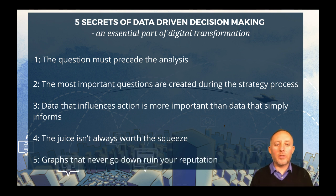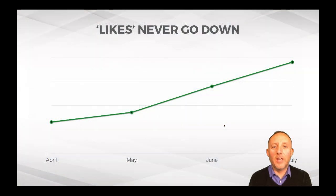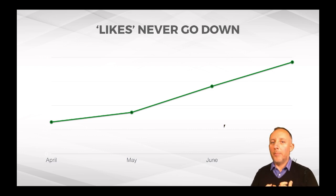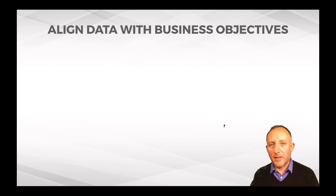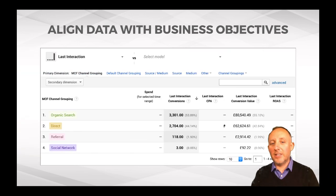Here is number five, the last one. Graphs that never go down ruin your reputation. I have never seen a graph for social media likes or following go down. 14% of marketers are at the boardroom table in US businesses. This is typically because they measure things that they like, that they want, but have no significance within the business whatsoever. The data that matters in the business is that which aligns with the business objectives. If marketers are unable to understand the business objectives, we have a leadership problem.